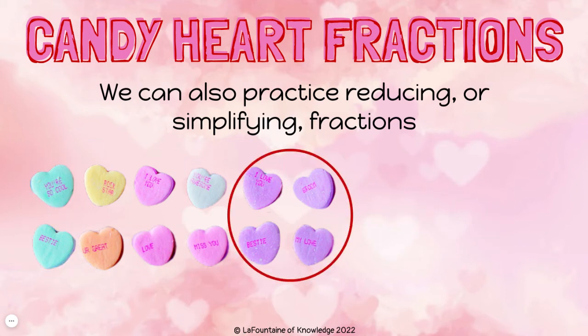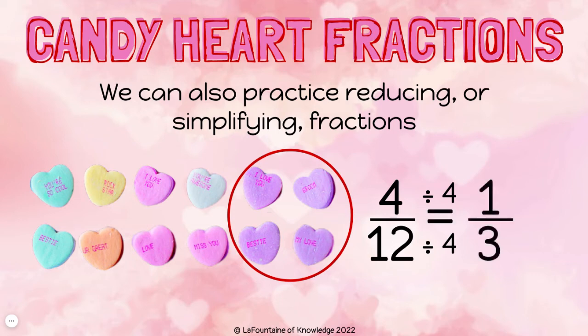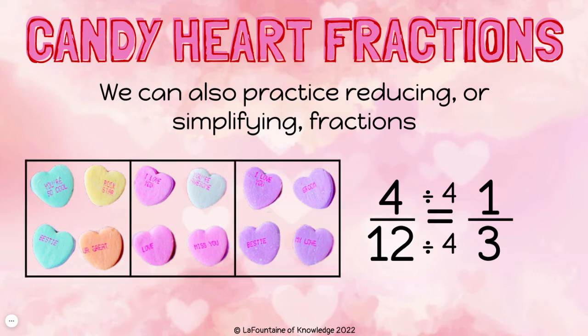Let's simplify four twelfths. Four and twelve can both be divided by four. Four twelfths in simplest form is one third. If I divide up my candy hearts into three equal groups, I can see that one of the thirds is purple.